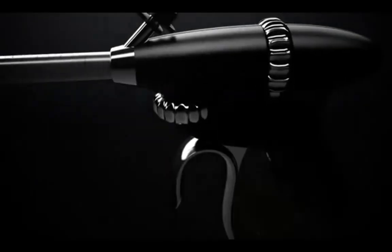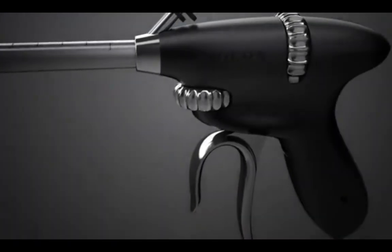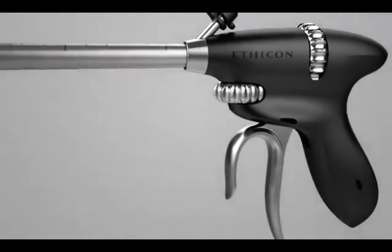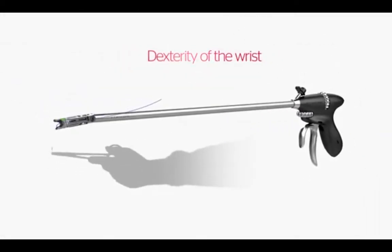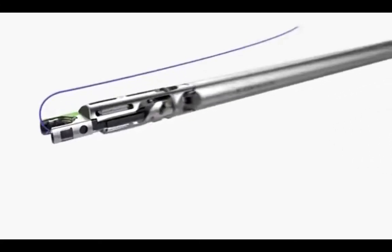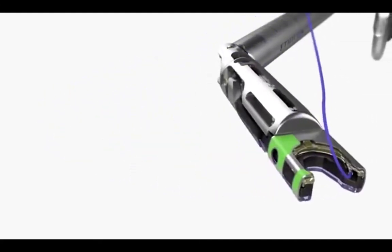Introducing the ProxyShore suturing device from Ethicon. ProxyShore suturing device is a reusable instrument with a limited life that mimics the dexterity of the wrist through bi-directional 45 degree articulation.